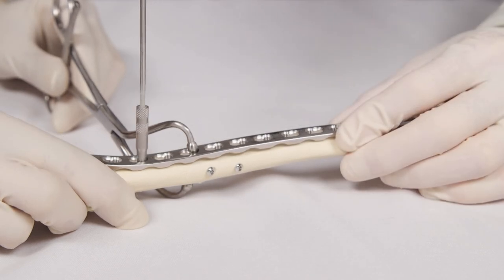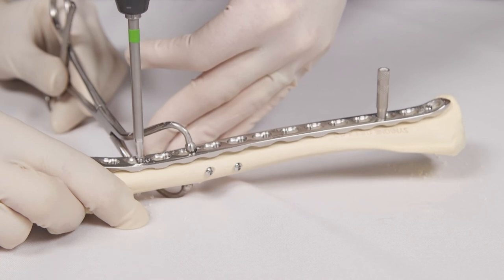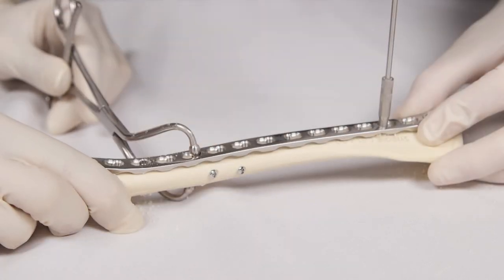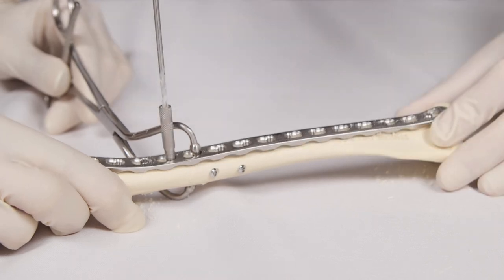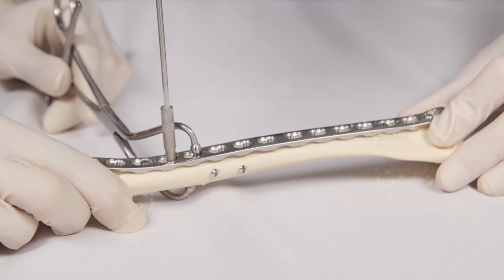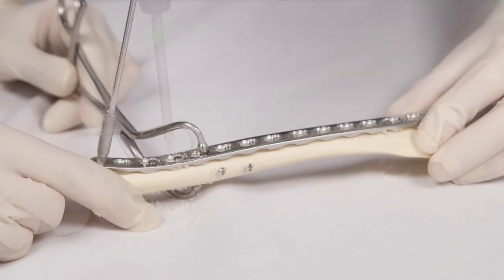The exact order of screw placement for a neutralization plate is not prescriptive, but it is not necessary to fill every screw hole. Typically, three to five screws are spread out over the proximal and distal sections of bone. No screws are placed in the central portion of the plate over the fracture.